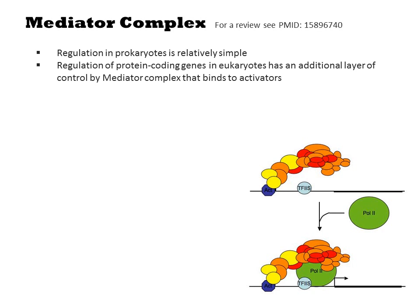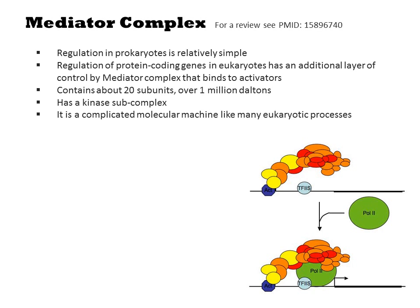The mediator complex is the orange cluster in the diagram. In some ways you can think of mediator as being like sigma-70 in prokaryotes, but it contains about 20 subunits and over 1 million Daltons worth of protein, so it's a much more complicated thing. It contains an internal regulatory process called the kinase subcomplex. Not much is known about how all this works — it's a complicated molecular machine like many eukaryotic processes are.